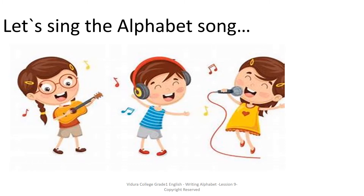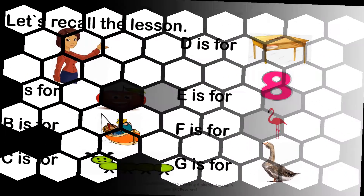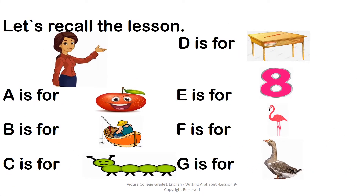Well done. Ok, now let's recall the lesson. We are going to look at some pictures and say the letter. Shall we start? Ok. A is for Apple. B is for Boat. C is for Caterpillar. D is for Desk. E is for Eight. F is for Flamingo. G is for Goose. Very good.